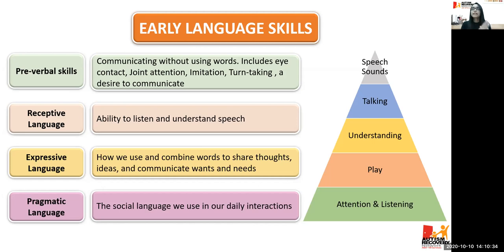Children as young as one year old start to show a desire to communicate by pointing or gestures — if they want to be carried, they raise their arms, or they pull the adult if they want something. The foundation or pre-verbal skills are very important in order for the child to learn language. Then comes receptive language, which is the ability to listen and understand speech.